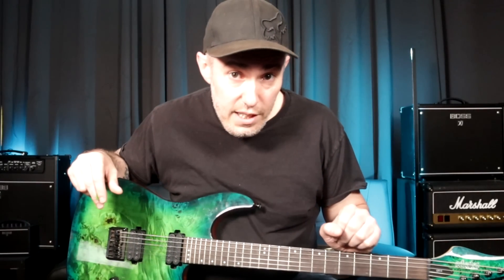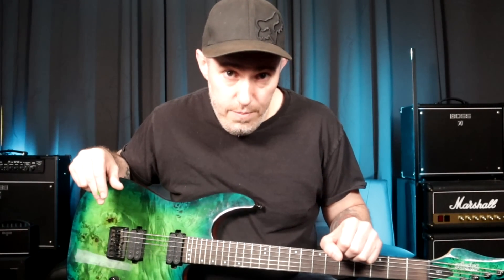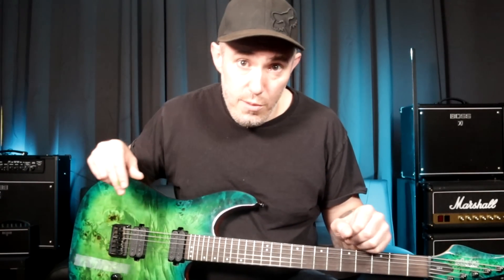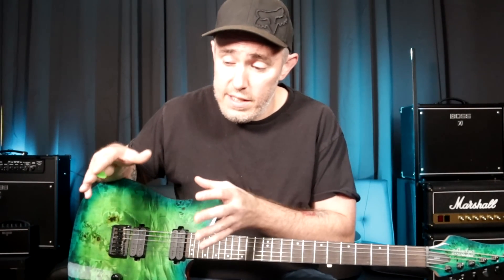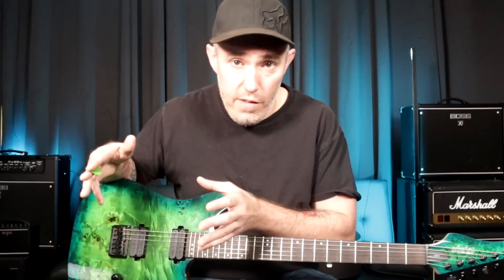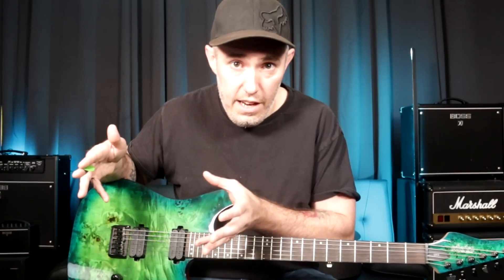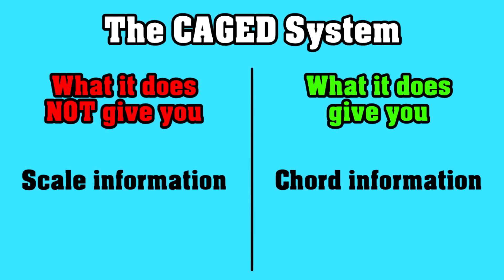Conspiracy theory number two is the CAGED system. The CAGED system is a great system — I love it, highly advocate it, I teach it. The CAGED system is about chords, soloing over chord changes, chord tone targeting, arpeggios, playing to the changes, anything like that.